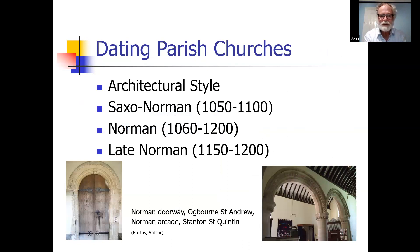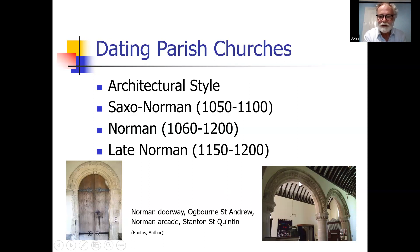How do you go about dating parish churches? This is done on the basis of architectural style. You can, if you're lucky, distinguish between Saxo-Norman or early Norman — roughly 1050 to 1100, also called the Saxo-Norman overlap — Norman broadly from 1060 to about 1200, and late Norman based on changes in style from 1150 to about 1200. The sorts of things you're looking for include Norman doorways, Norman arcades, and wonderful chevrons and very heavy abstract or geometric ornamentation — characteristic of the Romanesque architecture of the period — which enable you to date the church or parts of it.